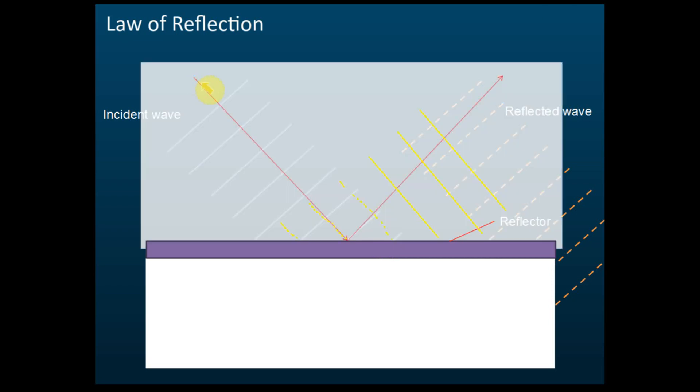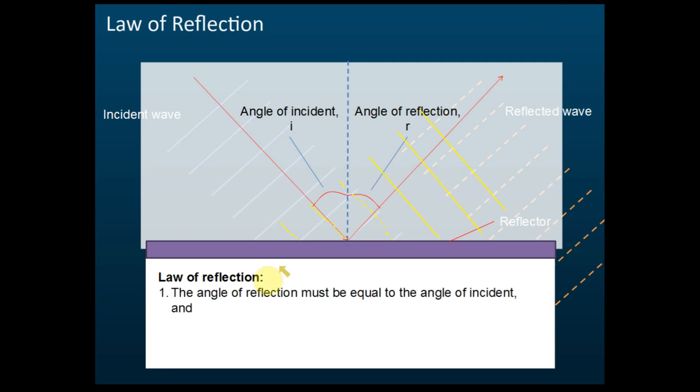If we draw the lines for the directions of the wave and then we draw a normal at the center, then you will find that this is the angle of incidence, denoted by i, and this is the angle of reflection, denoted by r. These two angles should be the same. So that is the law of reflection. The angle of reflection must be equal to the angle of incidence. This is the first law.